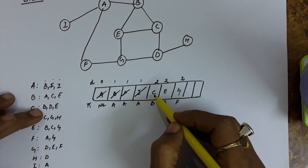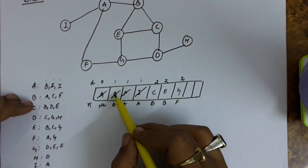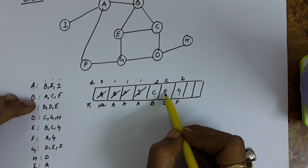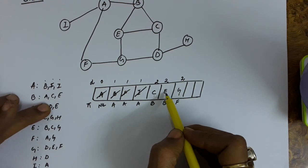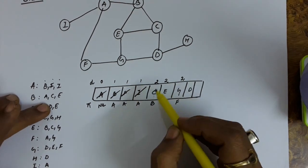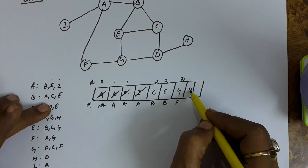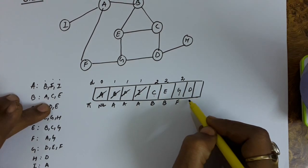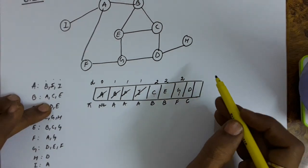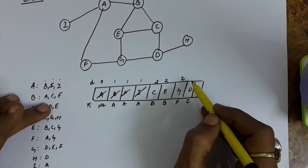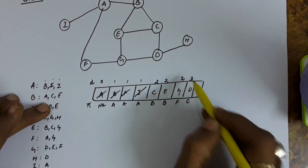See the connections from C. These are B, D and E. B, E is there in the queue. D is not there. So we can add this D. Since D has got explored from C, so the predecessor will be C. And the distance of D will be one more than C which is three.